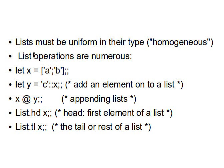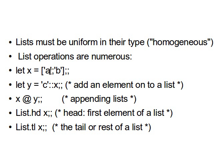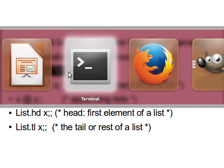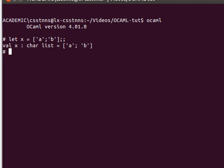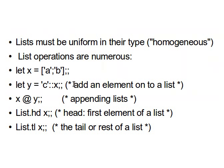We have many operations we can do on lists in OCaml. For example, to declare a list of characters, we say: let x = ['a'; 'b']. Let me paste that into the top-level and as you can see, OCaml automatically knows that this is a list of chars.